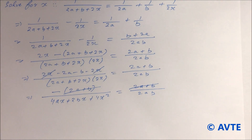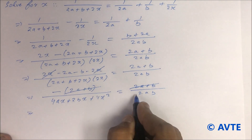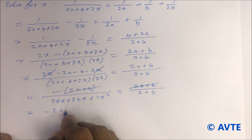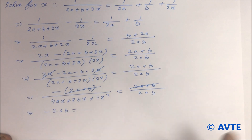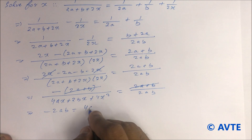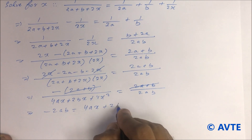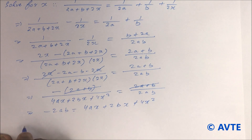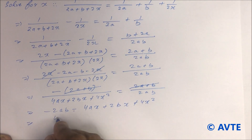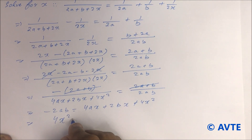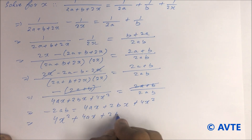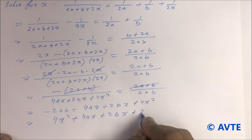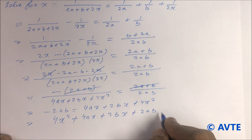So now 2ab minus 2ab equals 4ax plus 2bx plus 4x squared. Rearranging, we get 4x squared plus 4ax plus 2bx plus 2ab equals 0.